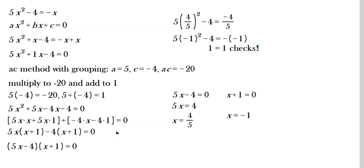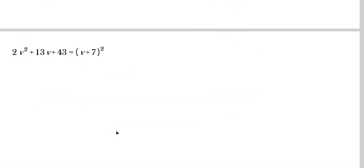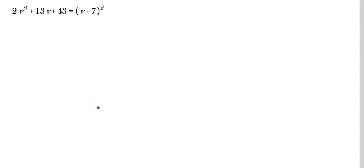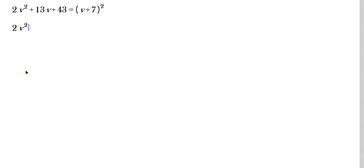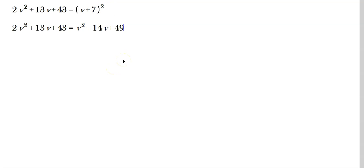I've done this in a lot of detail — if you can skip some of this, that's fine. Let's move on. So 2v squared plus 13v plus 43 equals (v plus 7) squared. Here you have to expand the right side first, so 2v squared plus 13v plus 43 equals this expanded form.